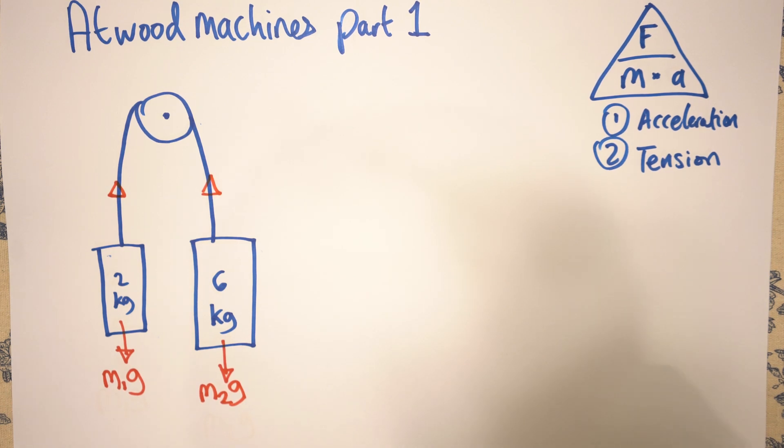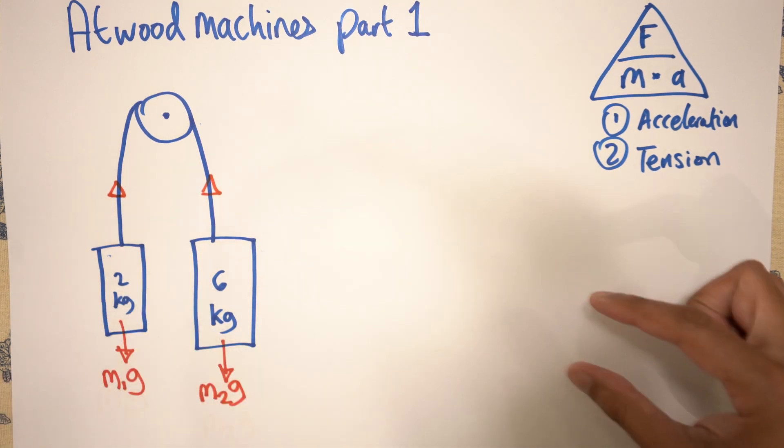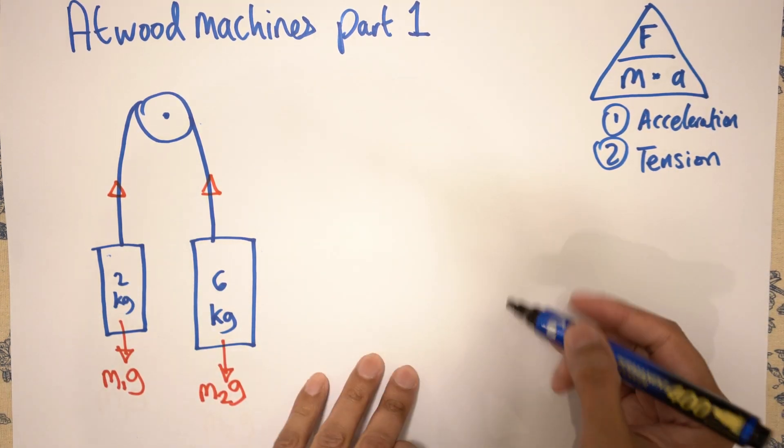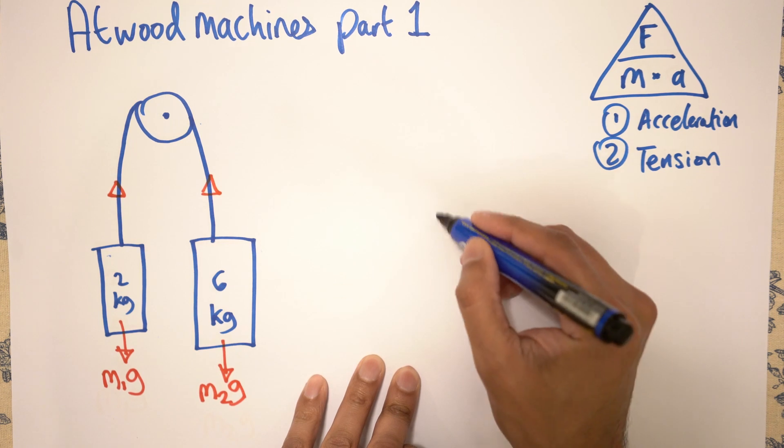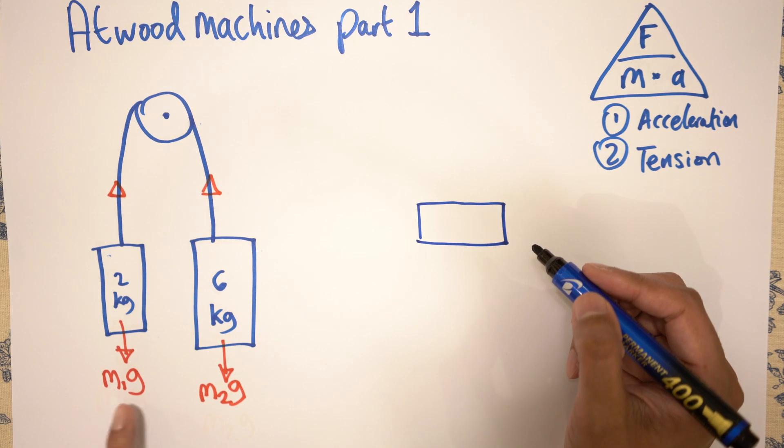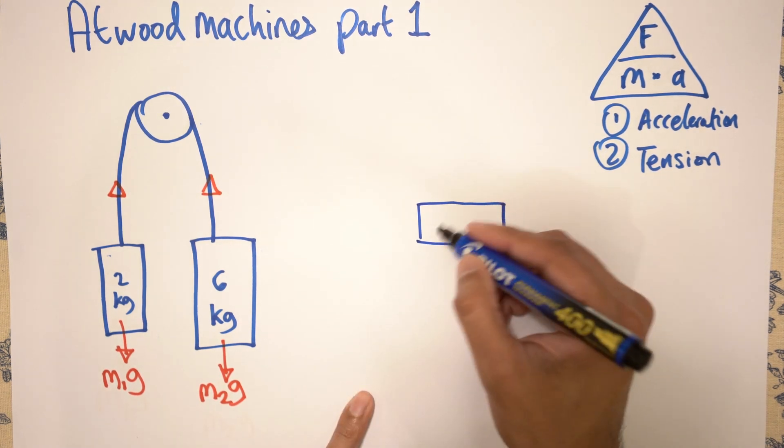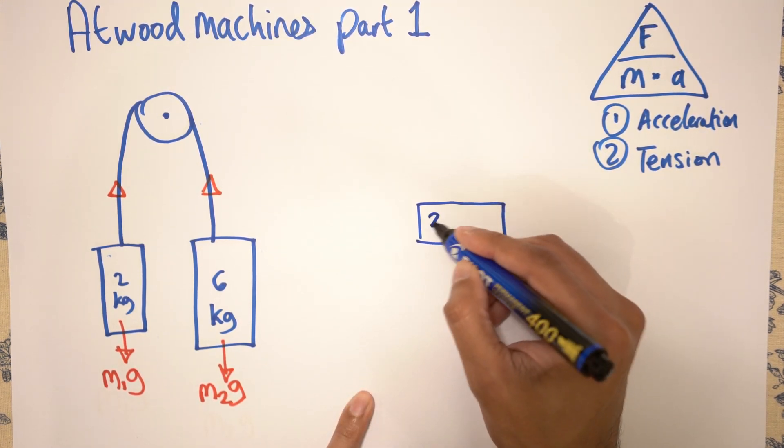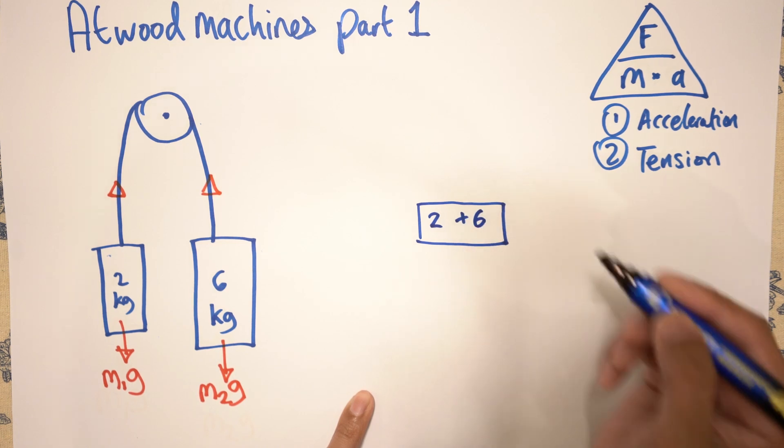Okay, so first of all we need to redraw this situation in a line. So what I'm going to do is imagine that this is one massive block, and I'm going to take these two into account. So this massive block would be the 2kg plus the 6kg.